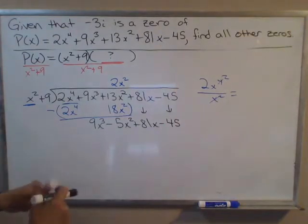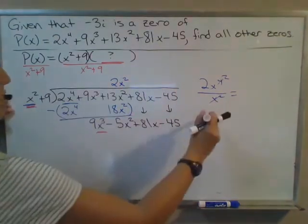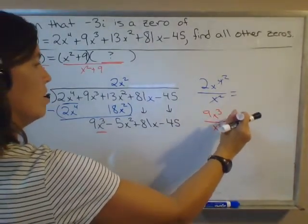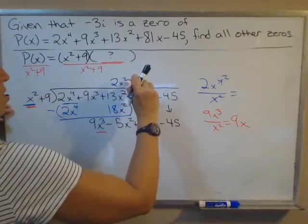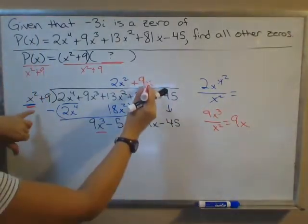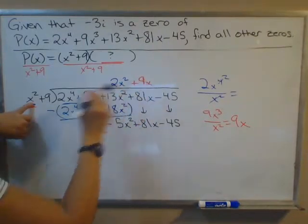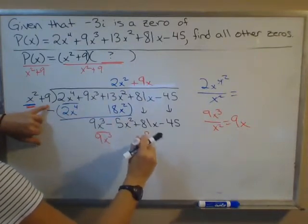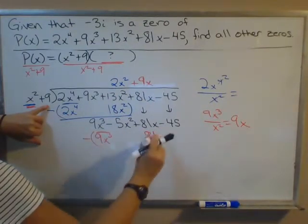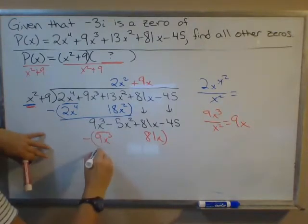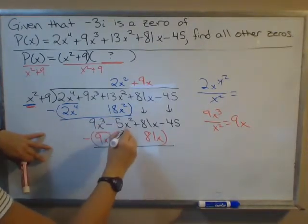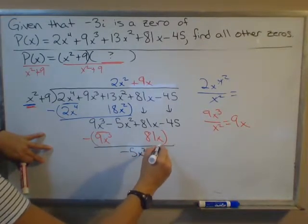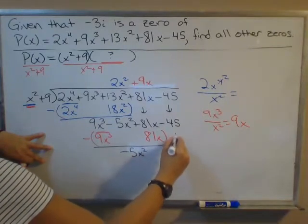Got to go around again. Divide just the leading terms: 9x^3 divided by x^2 is 9x. Multiply 9x times x^2 + 9, and subtract from what's above. 9x^3 - 9x^3 is gone. -5x^2 minus nothing just comes down. 81x - 81x is gone. The -45 just comes straight down.